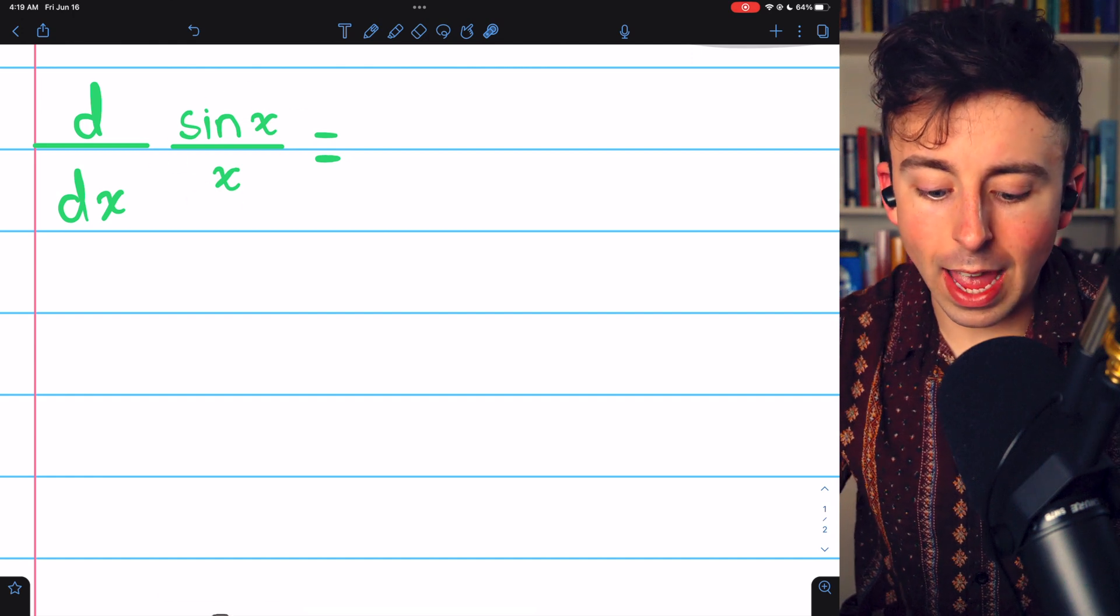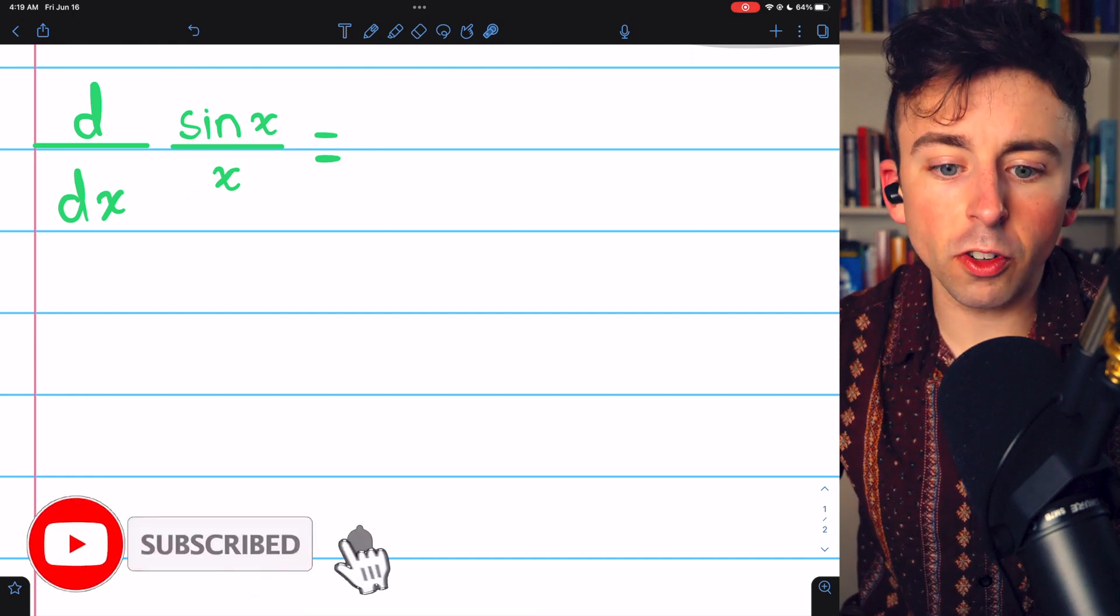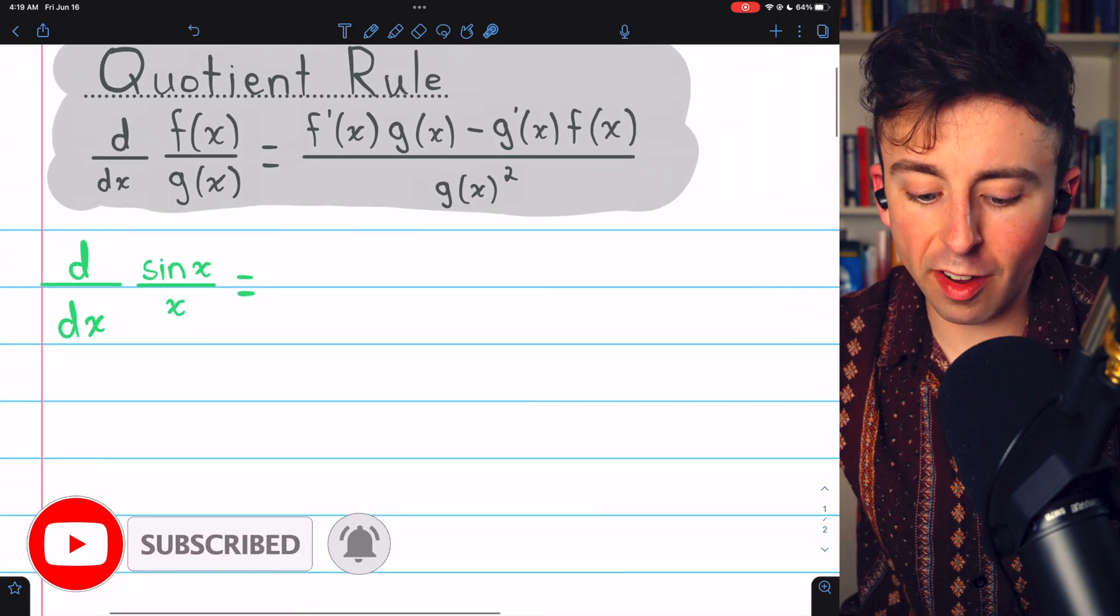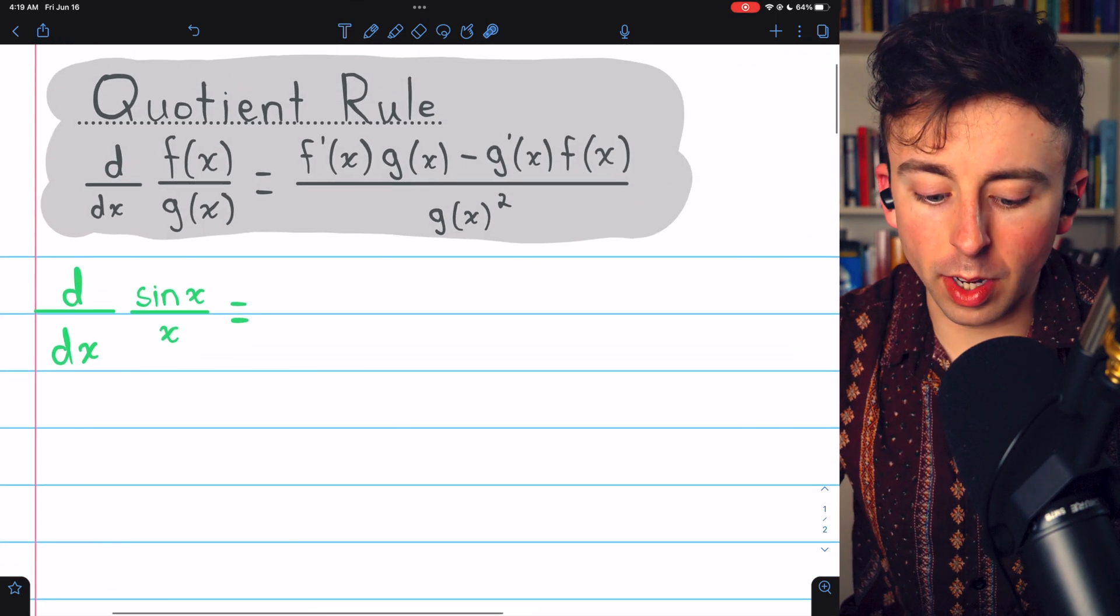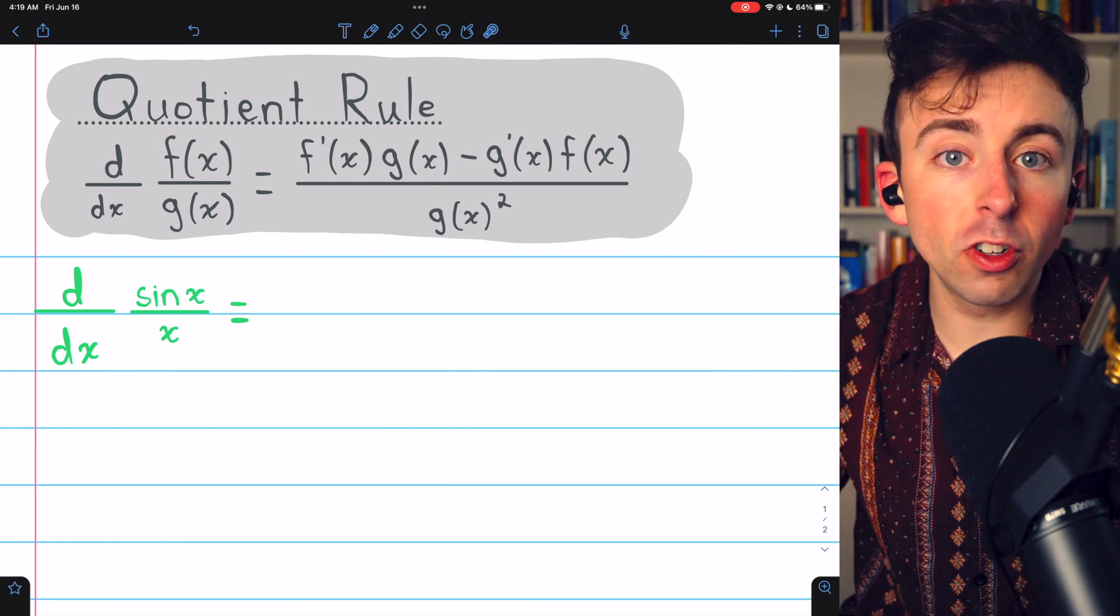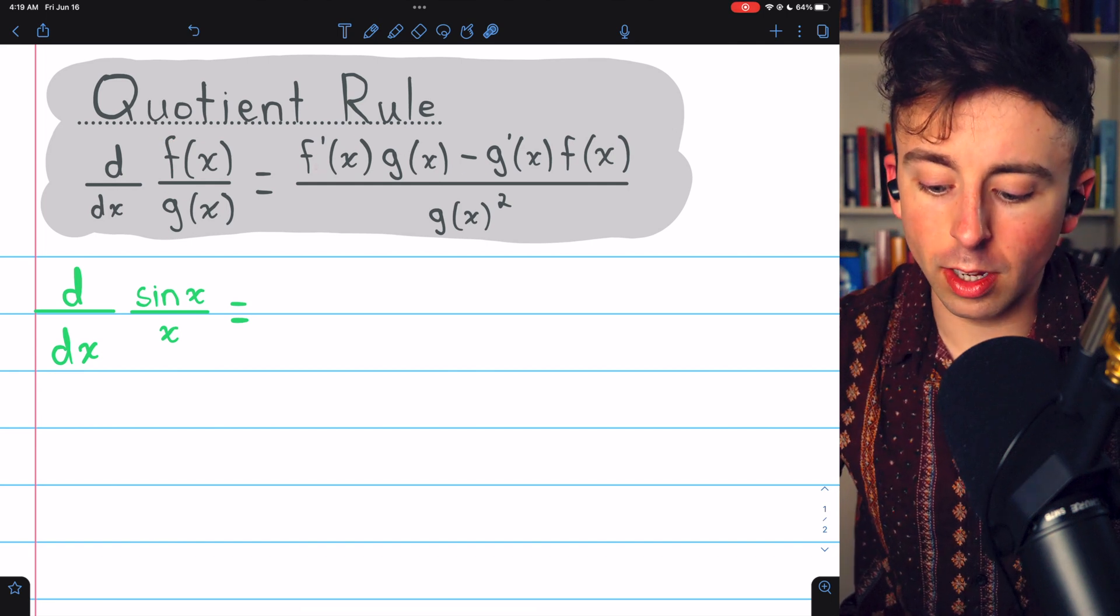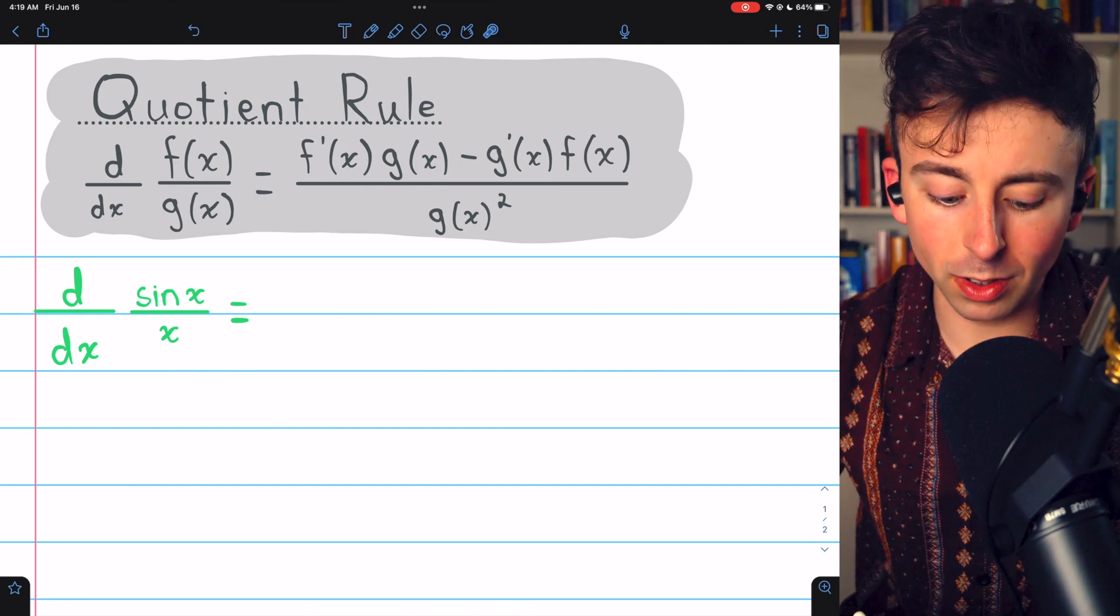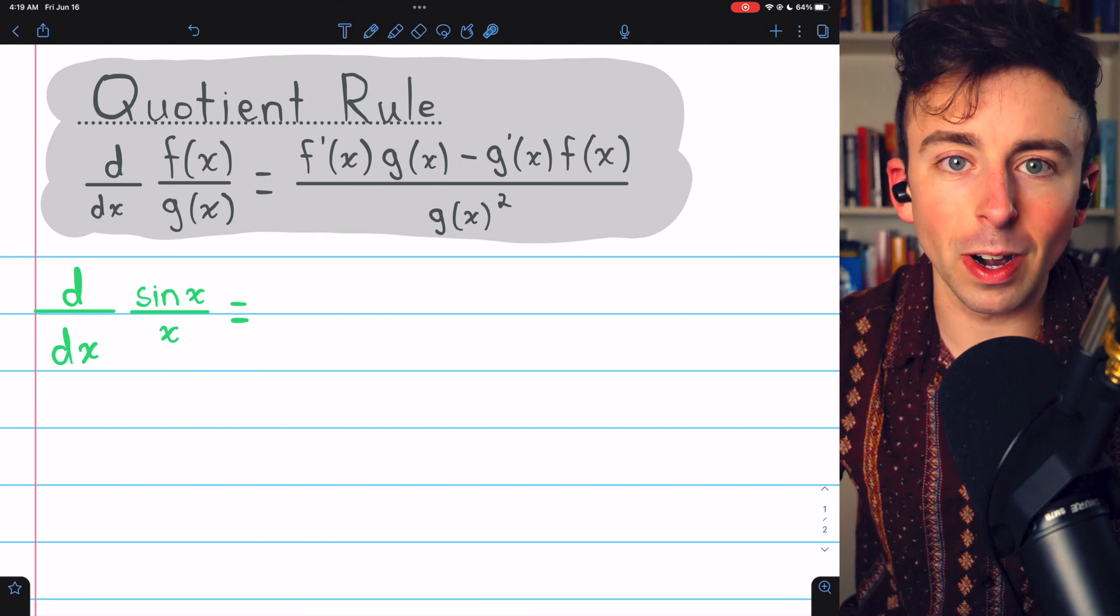Since sin x divided by x is a quotient of functions, to take its derivative, we need to use the quotient rule, which I've provided here. The derivative of f of x divided by g of x is f prime g minus g prime f all over g squared. So let's use the quotient rule to take the derivative of sin x over x.